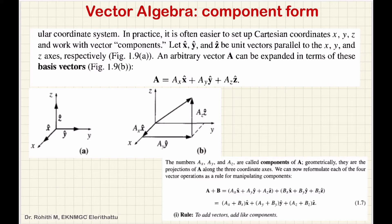So, you have a vector A. Using the component formula, we can express vector A with its x, y, and z components — specifically the z direction component.